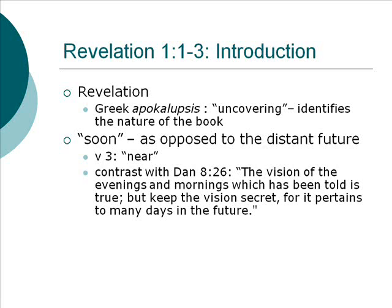Within a couple of generations at the most is what we are to understand here. These things are not going to happen in a month or a day. It may extend into a second generation, but the things John says he's going to show are not things that will happen thousands or millions of years from now. That is one of the real problems with the premillennial interpretation of the book of Revelation, because it doesn't make any sense of the word 'soon.' The context we've chosen to go by, I think, does justice to that.